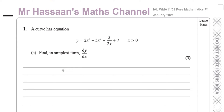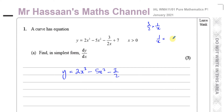I'm going to write this as y equals 2x³ minus 5x² minus 3 over 2 times x to the power of minus 1, plus 7. That's because 3 over 2x is like 3 over 2 times 1 over x, and 1 over x is x to the power of minus 1 — that's the law of indices: a to the power of minus m equals 1 over a to the power of m. So I can write it as minus 3 over 2 · x^(−1) plus 7. Now it's ready to be differentiated.